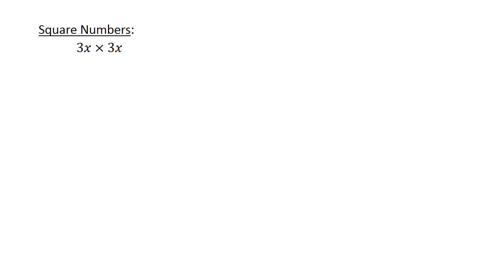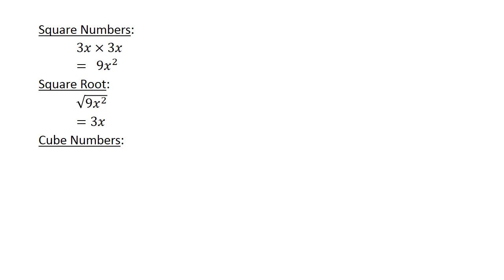Square numbers with algebra: 3x times 3x equals 9x to the power of 2. Square root: the square root of 9x squared equals 3x. Cube numbers: 3x times 3x times 3x equals 27x to the power of 3.